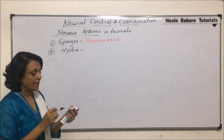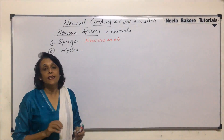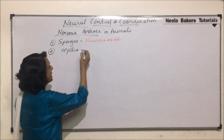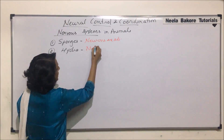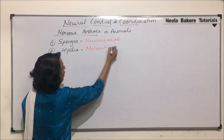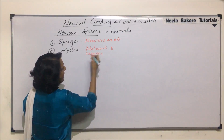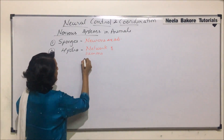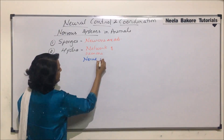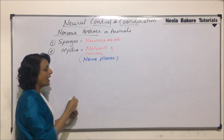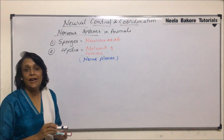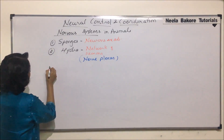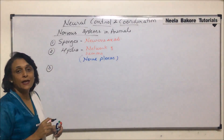The second category: organisms like hydra, that is cnidarians. In case of hydra, there is a network of neurons which is known as a nerve plexus. This network of neurons helps them in control and coordination.